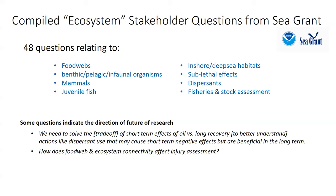Sea Grant identified 48 questions relating to ecosystem impacts. These touched on food webs, benthic, pelagic, and infaunal organisms, mammals and juvenile fish, as well as inshore and deep sea habitats, sublethal effects and dispersants, fisheries and stock assessment. Some pressing questions may help direct future research. For example, one commenter asked how we can reconcile the trade-off between short-term negative effects of remediation actions like dispersant use with the long-term benefit to restoration.